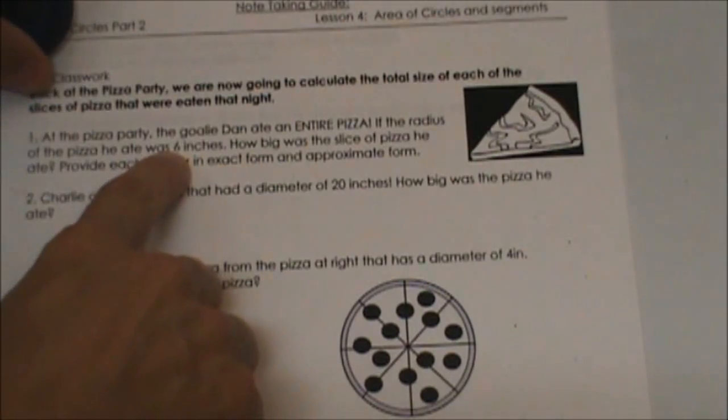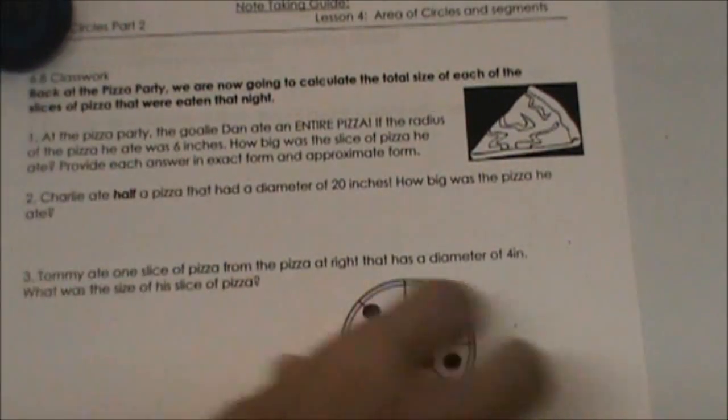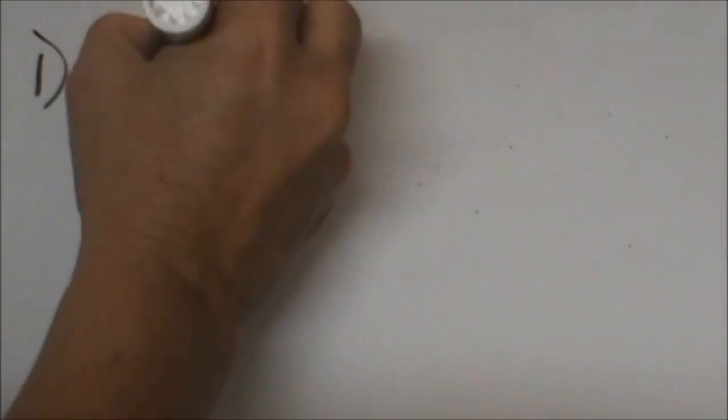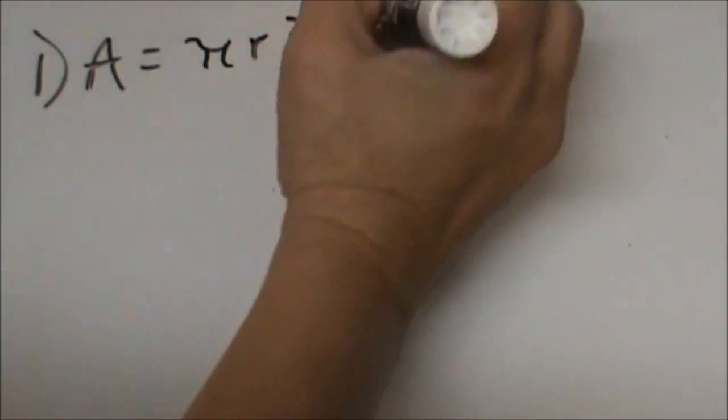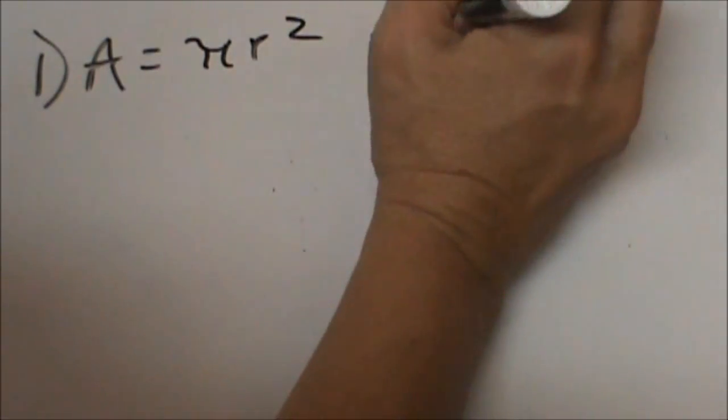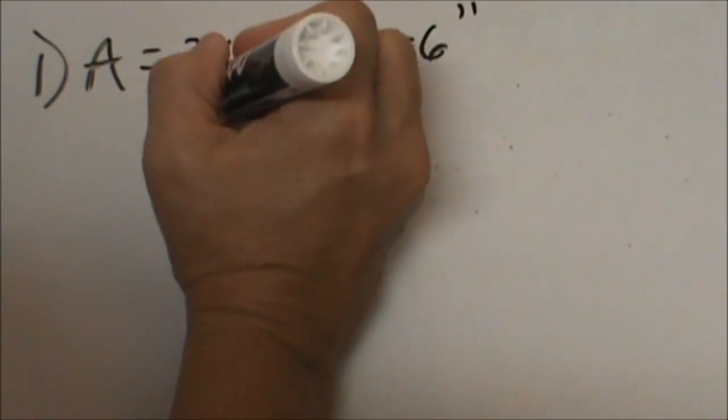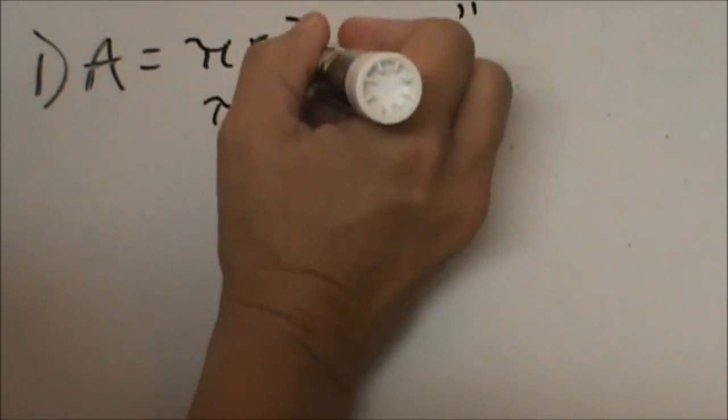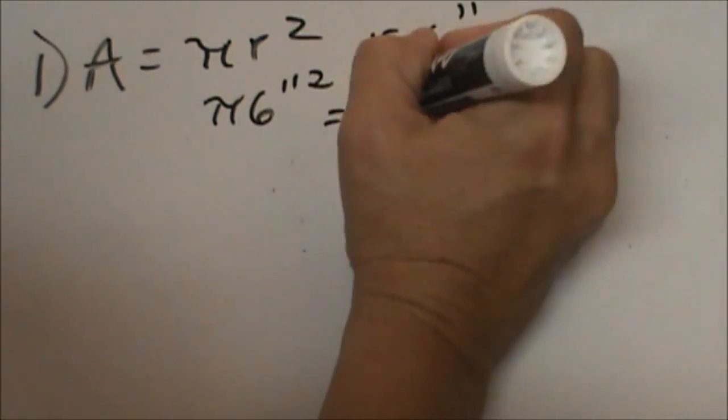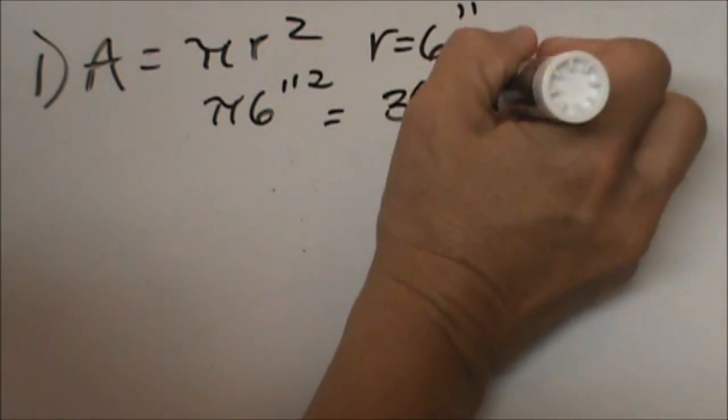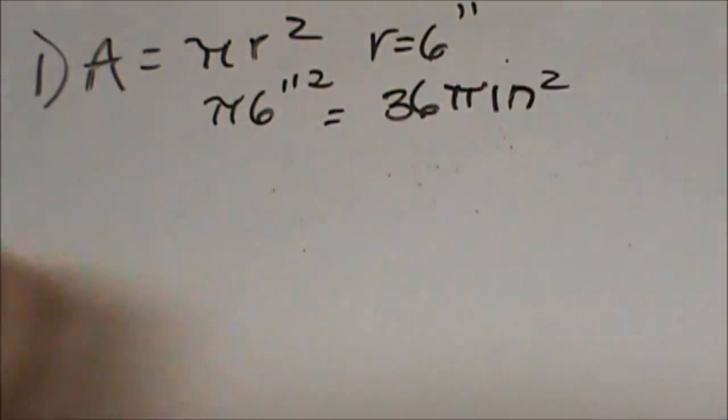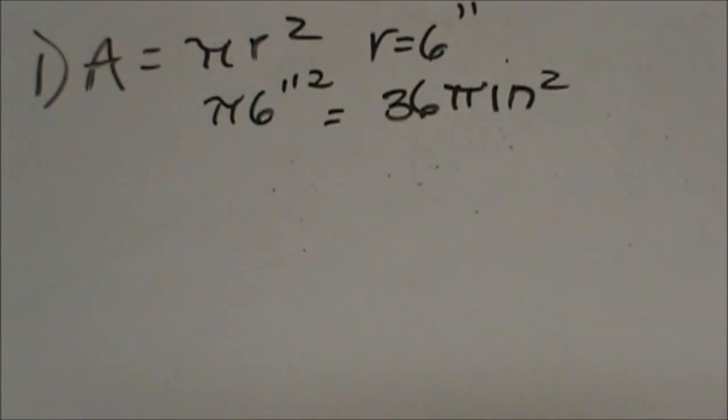So that one's pretty easy. So we're just going to take area equals pi r squared, and our radius is six inches. So we're going to get pi and six inches squared, which is 36 pi inches squared. So that was pretty easy and that's what Dan ate.